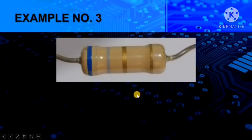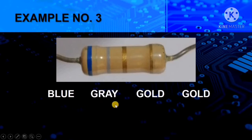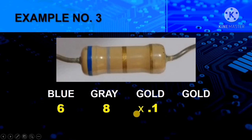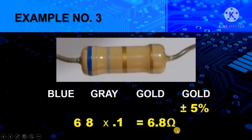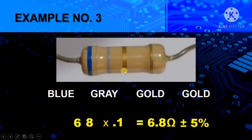Another colors combination: blue, gray, gold, and gold. Blue has a value of 6, gray is 8. Gold as the multiplier has a decimal value of 0.1, while gold as the tolerance has a value of plus or minus 5%. Putting them together and multiplying by 0.1, the answer is 6.8 ohms plus or minus 5%. Technique: if you see gold as the multiplier, remember there is a decimal point in between the first and second digit, since its value is times 0.1.